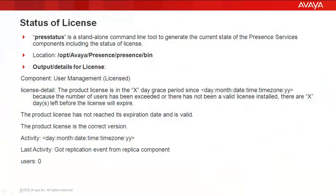To check the status of license, we use a command line tool called pressstatus. This tool provides the current status of the present services components, including the status of the license, which is really useful at the time of troubleshooting. We can check if the license is exceeding the number of users or if it is in an expiry state.